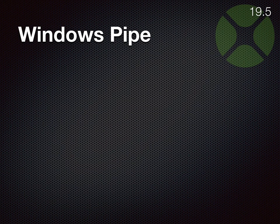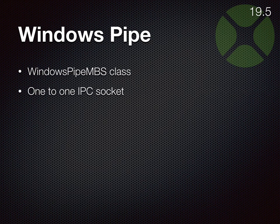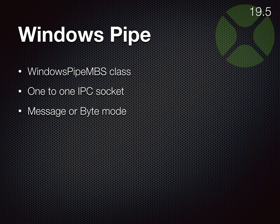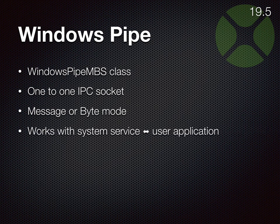We recently got a class for the Windows Pipe — Windows Pipe MBS — as a replacement for the IPC socket in Xojo. This can be used to send data from one application to another, even if one application is a service application. It can work in two modes: either byte mode like a normal socket, or message mode, where it ensures that if you send a block of text on one side, the event is only triggered when the whole block arrives — not just a part of it. We have tested it between system services running in the background and a user application to control it, and you can connect wonderfully between those.